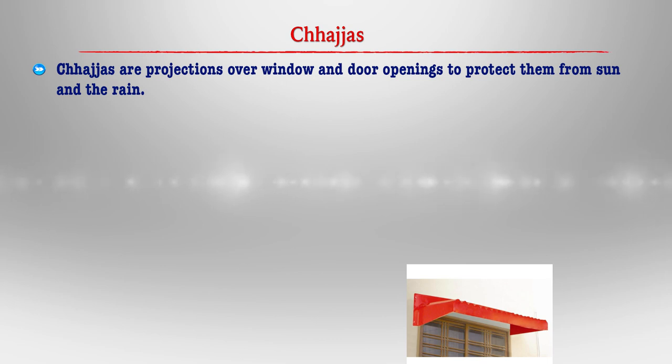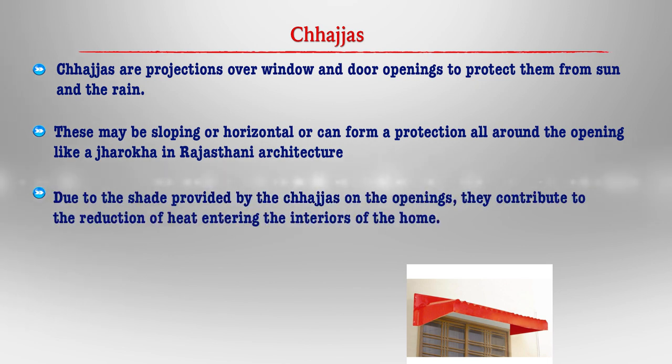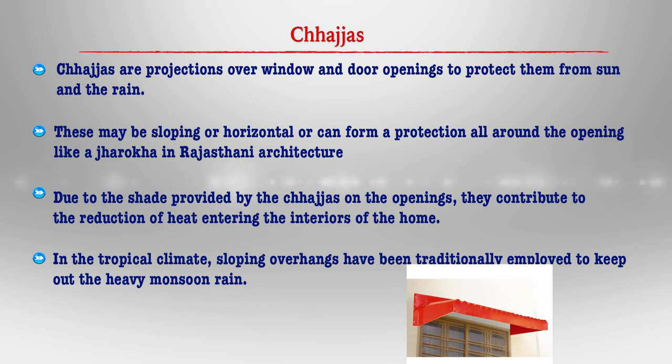Chajas are projections over window and door openings to protect them from sun and rain. They may be sloping or horizontal and can form protection all around the openings like a jharoka in Rajasthani architecture. Due to the shade provided by the chajas on the openings, they contribute to the reduction of heat entering the interior of the house. In tropical climates, sloping overhangs have been traditionally employed to keep out heavy monsoon rain. Similarly, chajas are used in areas that receive heavy snowfall. They are an architectural element that adds a lot of interest to the exteriors with the projections and shadows they cast.